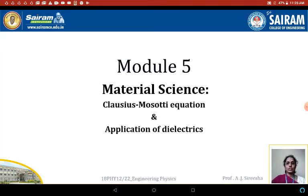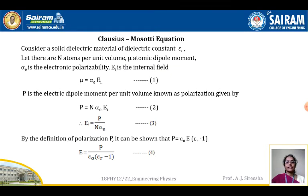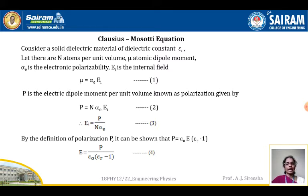In this session we are going to see the Clausius-Mossotti equation, its derivation and applications of dielectric in material science. Consider a solid dielectric material of dielectric constant epsilon_r. Let there be n atoms per unit volume, mu is the atomic dipole moment, alpha_e is the electronic polarizability, and E_a is the internal field.